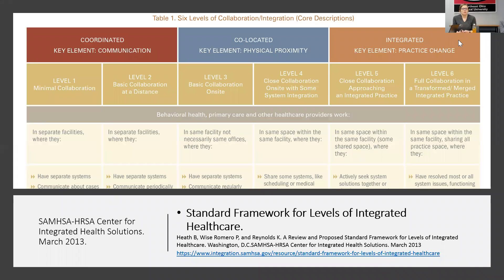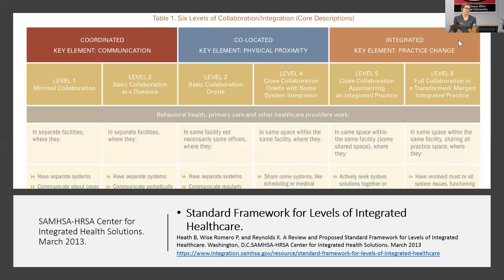One framework is the Standard Framework for Levels of Integrated Care put out by the SAMHSA-HRSA Center for Integrated Health Solutions, from March 2013. It shows six levels of integration. The lowest level is coordinated but minimal collaboration, where you're at separate facilities and don't communicate much — maybe referring back and forth occasionally or sending a report. Level two is basic collaboration at a distance, where you have somewhat more ready communication and information going back and forth between systems or fax machines — as odd as it is that we still use fax machines in 2020.